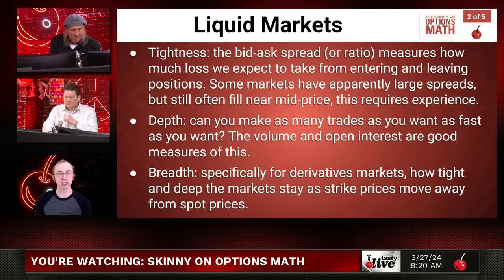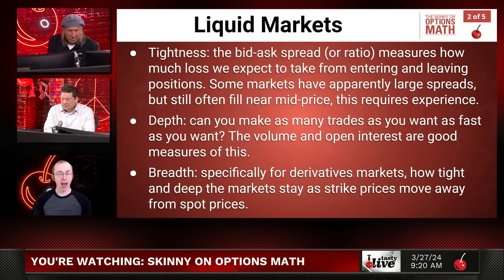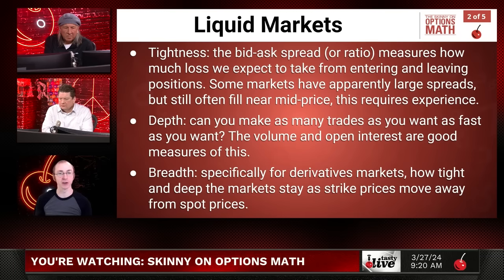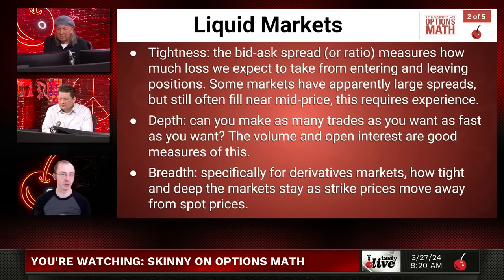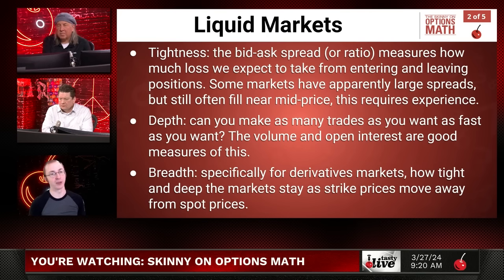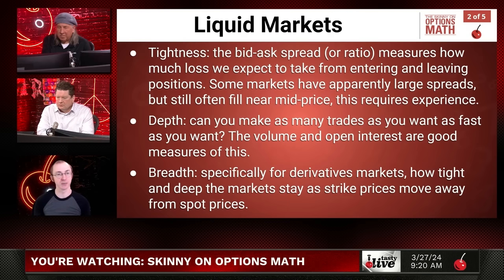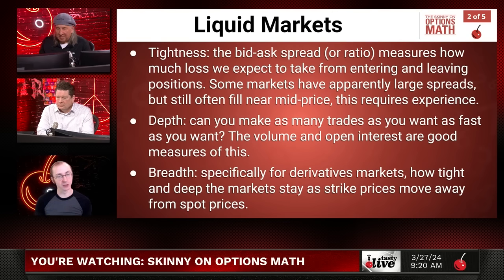You can also get a reasonable judge of that by looking at the depth, which is how much action is going on in this underlying. There are two main metrics to judge that with: the volume and the open interest. The volume is how many contracts have traded, and the open interest is how many bids and asks are out there waiting to be traded. Both of those give you a nice idea about how much you can expect out of this underlying in terms of availability.